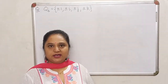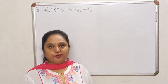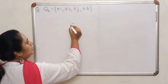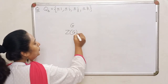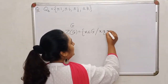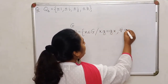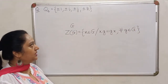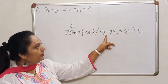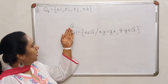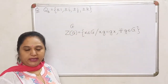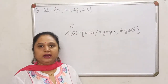Hello everyone. In the last lecture, we saw the definition of center of a group and we proved that the center becomes a subgroup of G. For any group G, we defined the center to be the collection of those elements in the group which commute with all other elements. The center is denoted by ZG. This concept is defined for any group — G may or may not be abelian — but we proved that the center will always be an abelian group.